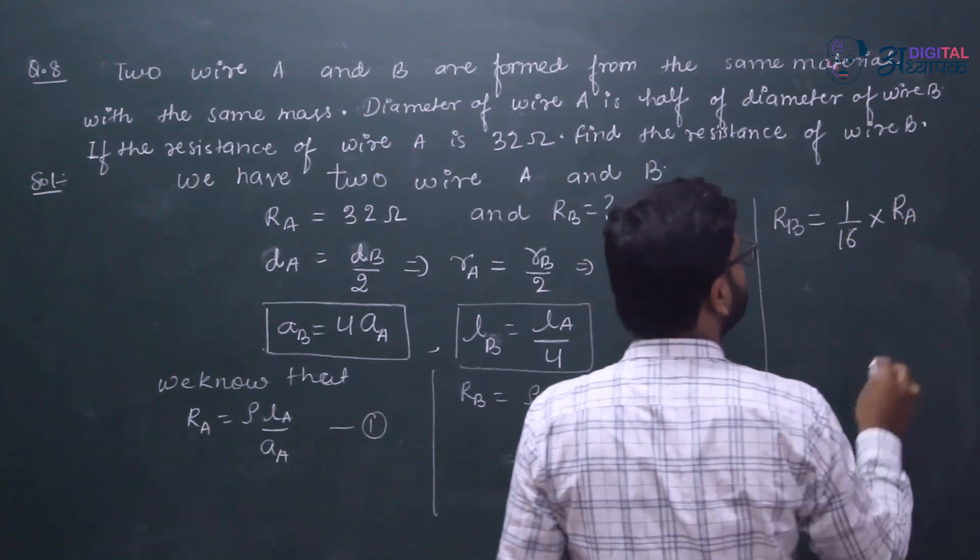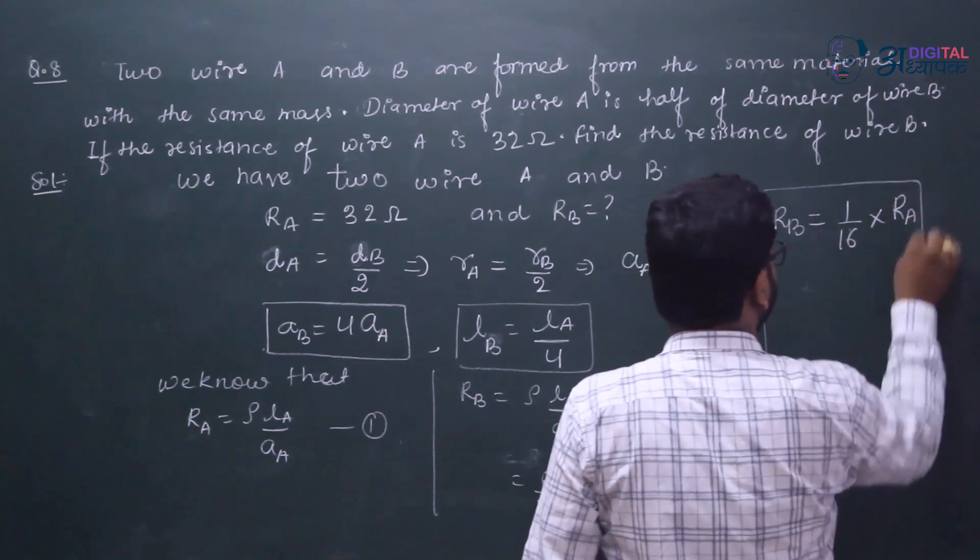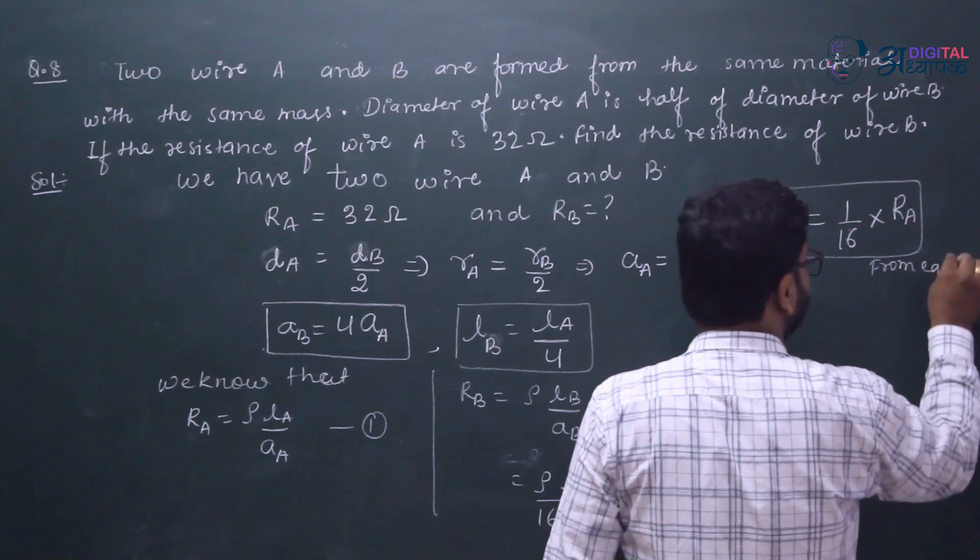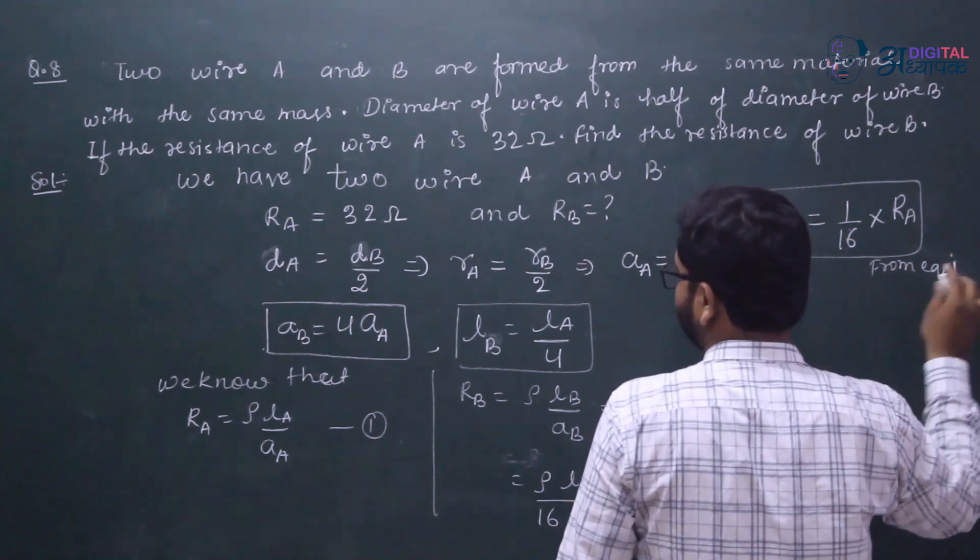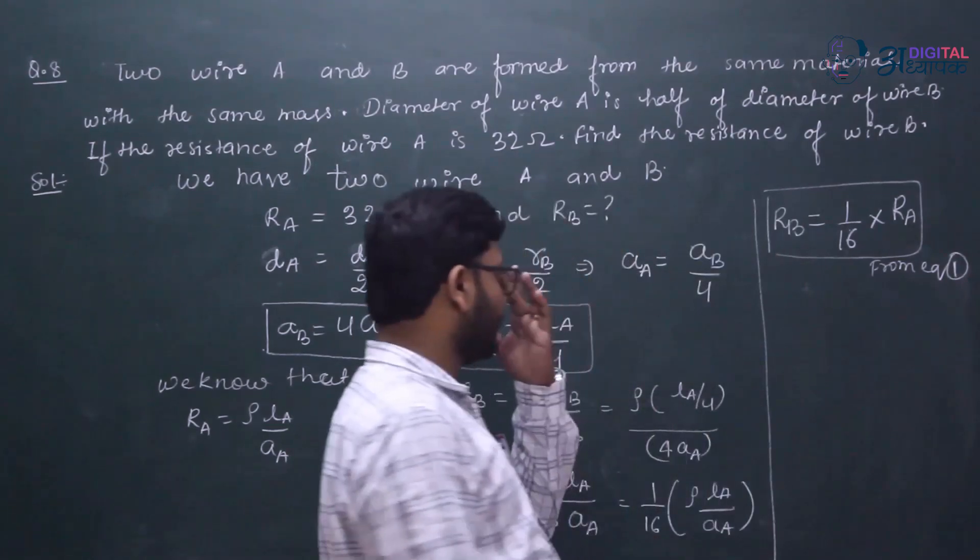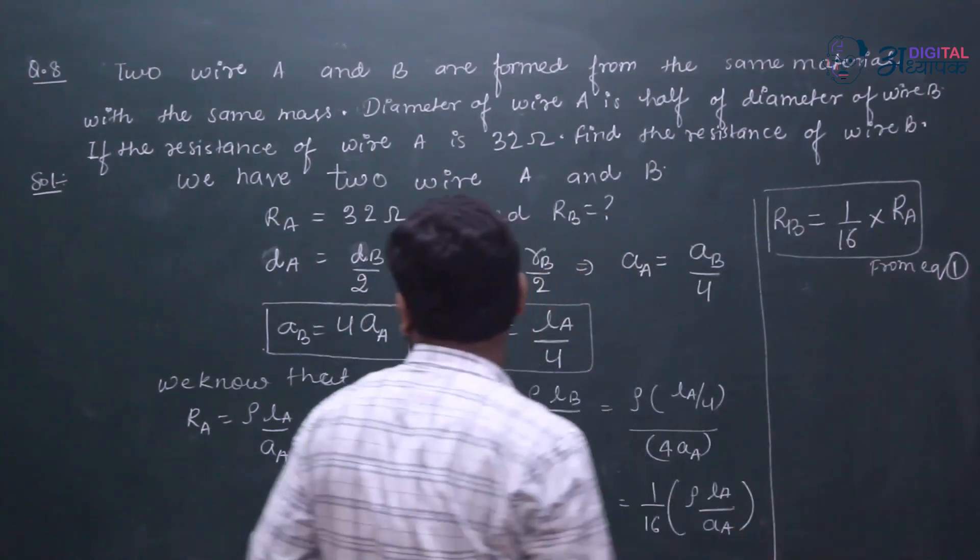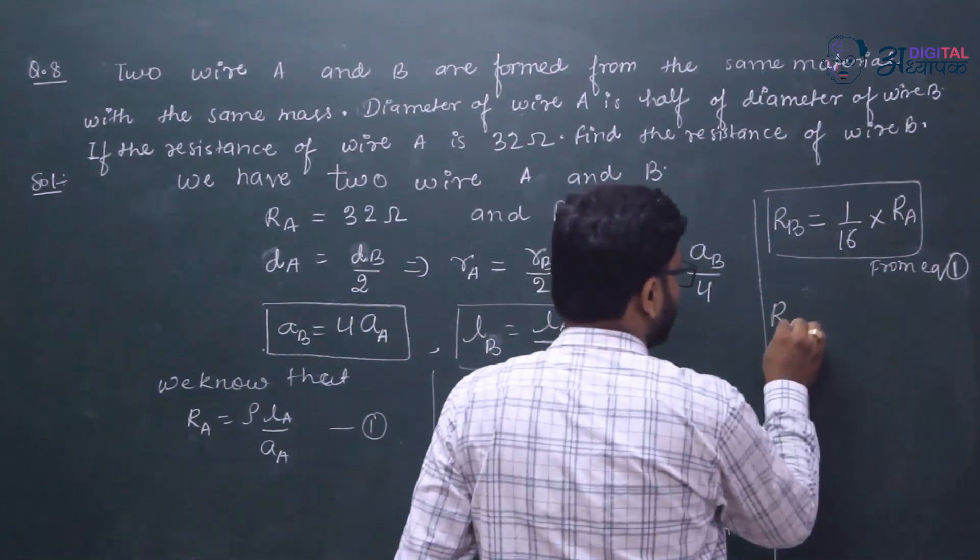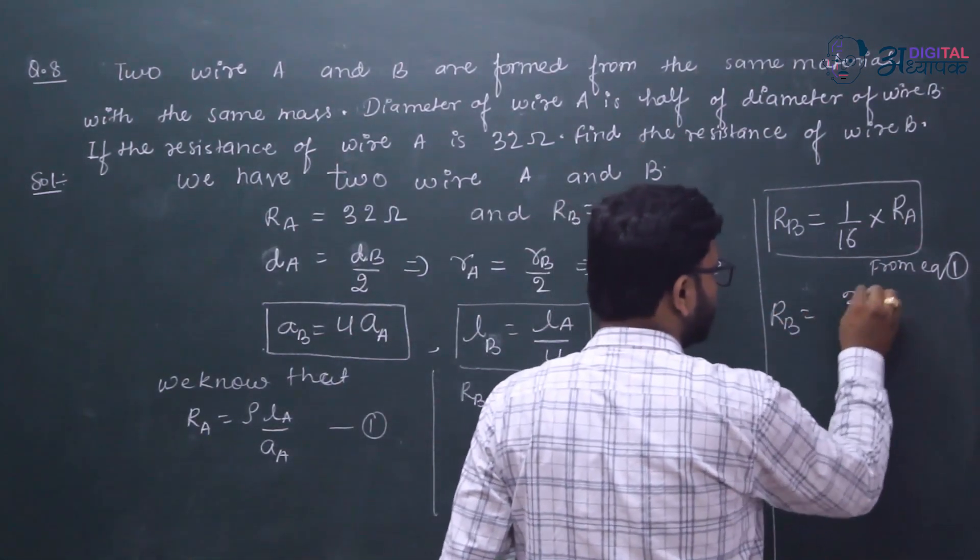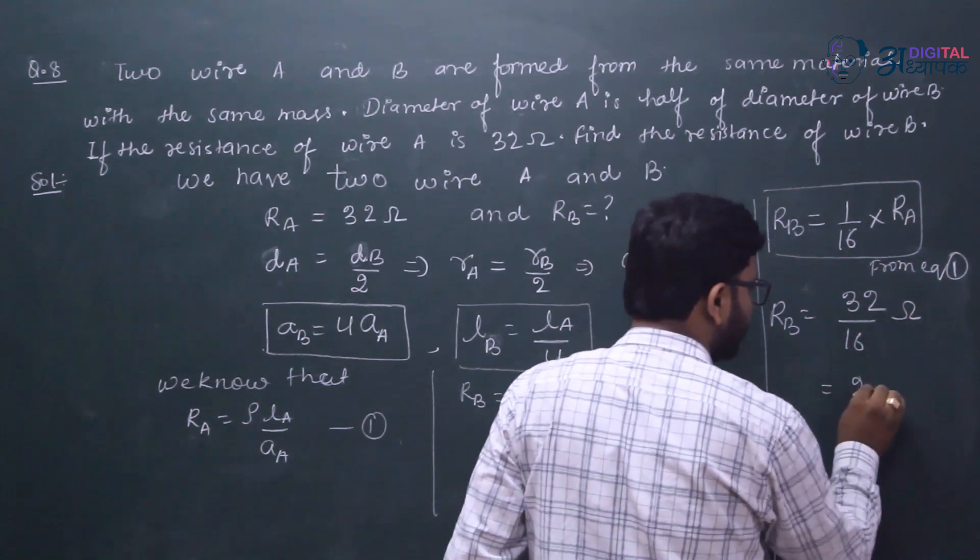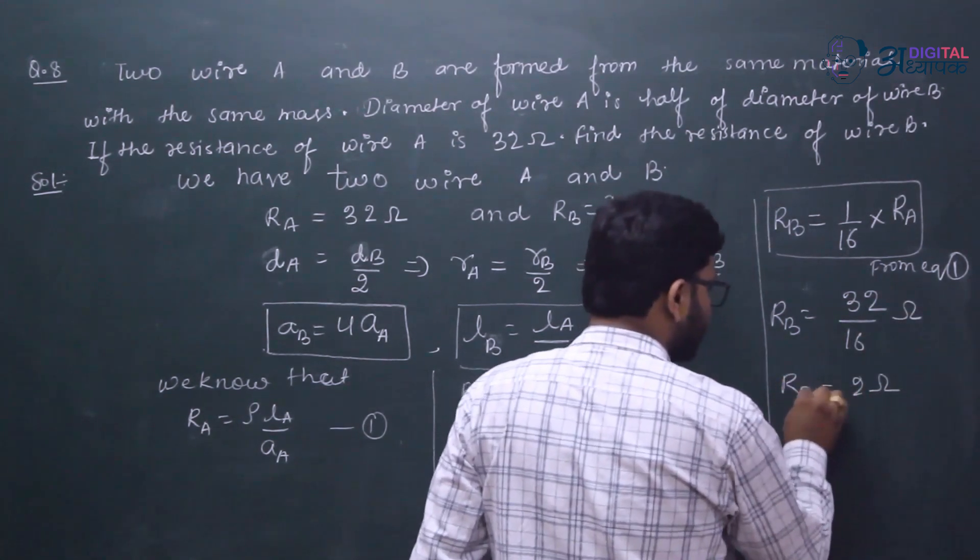From equation 1, this is equation number 1, here you can substitute RA value. RA is 32. RB is equal to 32 divided by 16.